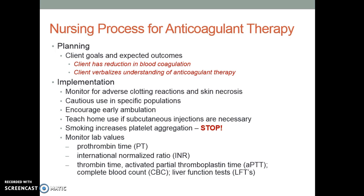Ideally your goals are a reduction in blood coagulation and patient education. Implementation includes monitoring the patient, encouraging early ambulation to reduce the risk of blood clot formation, and telling the patient to stop smoking, since smoking greatly increases platelet aggregation. Also monitor associated lab values, including a CBC for hemoglobin, hematocrit, and platelet count.